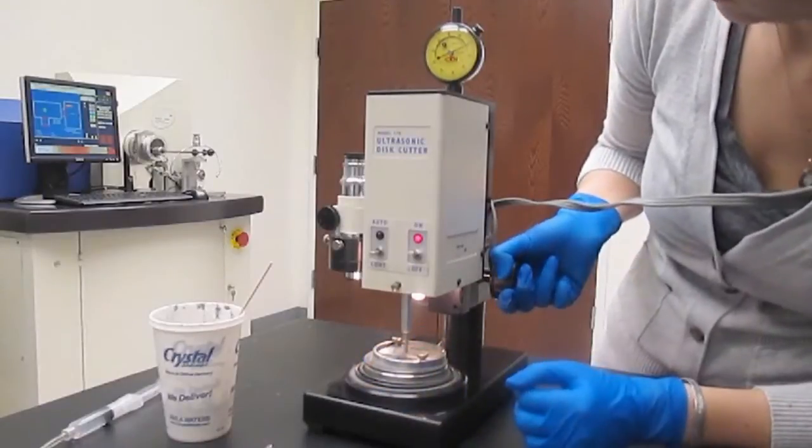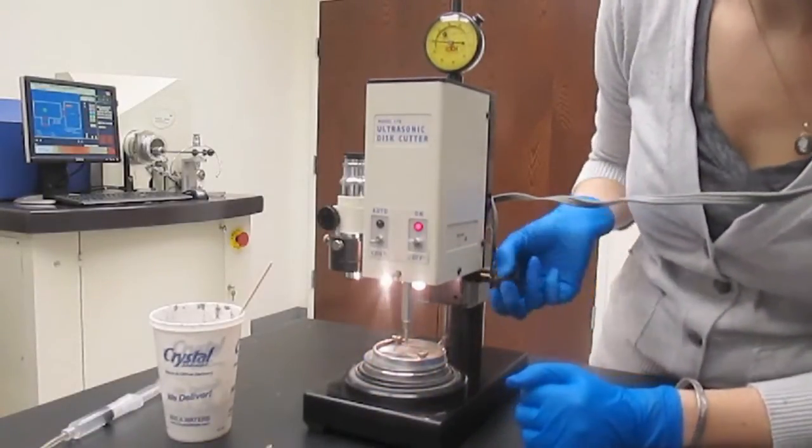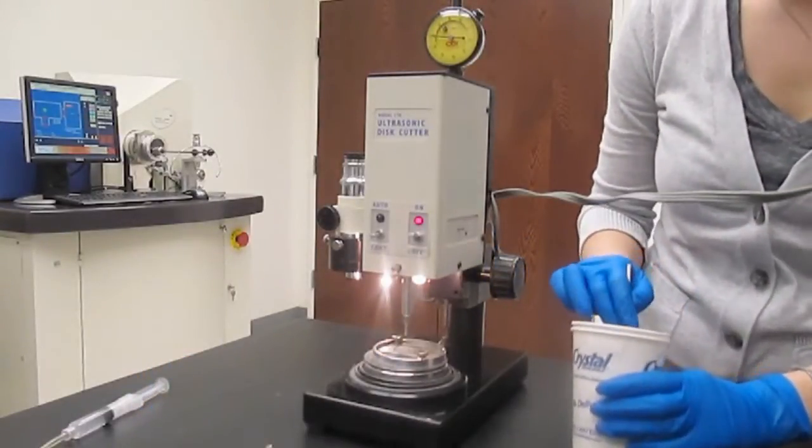If the dial indicator needle moves, that means that the indicator connecting rod is making contact with the indicator contactor assembly. Raise the cutting tool from the surface of the glass.